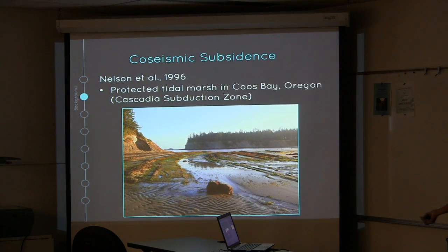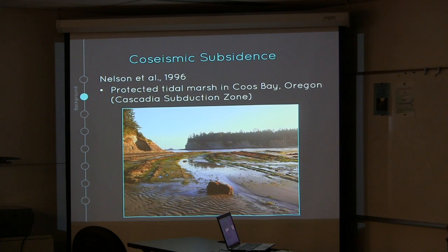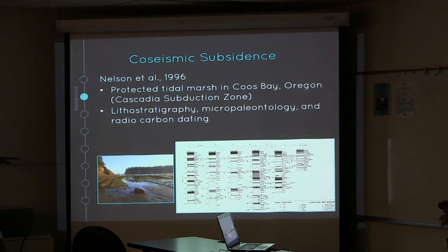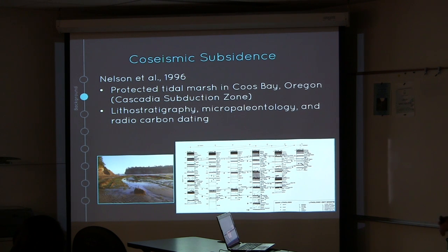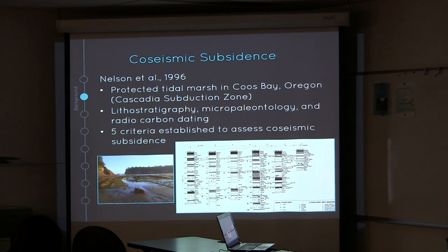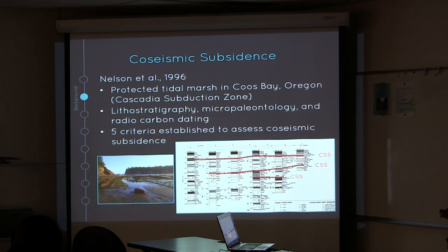Where have we seen co-seismic subsidence before? In the Cascadia subduction zone region, Nelson et al. did a study in 1996. Using lithostratigraphy, micropaleontology, and radiocarbon dating, they found 10 peat-to-mud contacts in the Coos Bay area in Oregon. They set up five criteria to assess co-seismic subsidence, and from these criteria found that 3 out of 10 of these peat-to-mud contacts were caused by co-seismic subsidence.